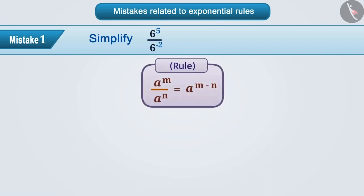They know that a to the power m upon a to the power n equals a to the power m minus n, but do not use it correctly.